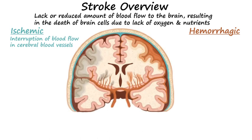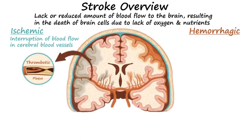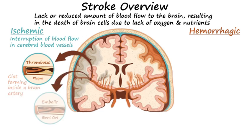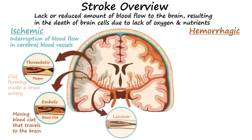Thrombotic strokes are characterized by a clot forming inside one of the brain arteries. Embolic strokes are caused by a moving blood clot that travels from its origin to the brain. A third type of ischemic stroke is a lacunar stroke, which is due to an artery becoming smaller in size.